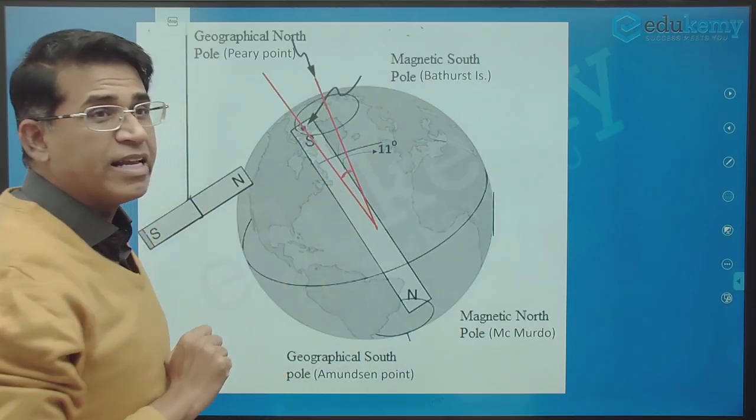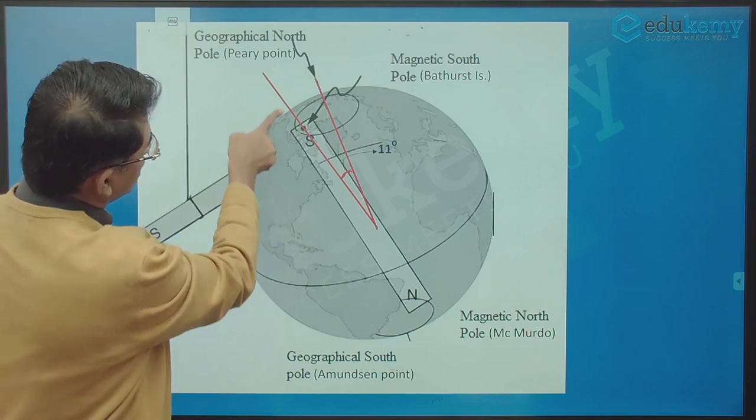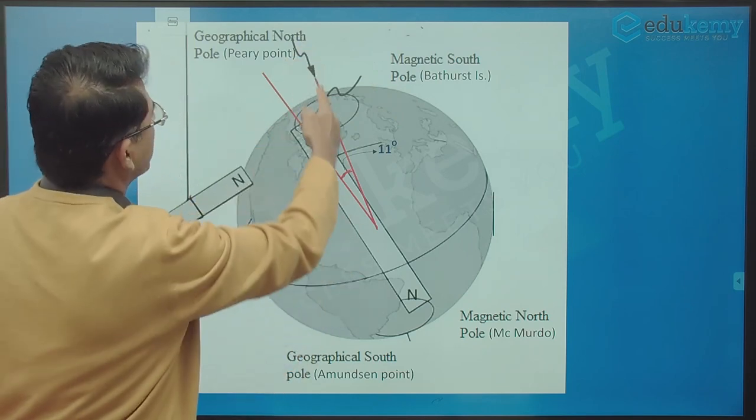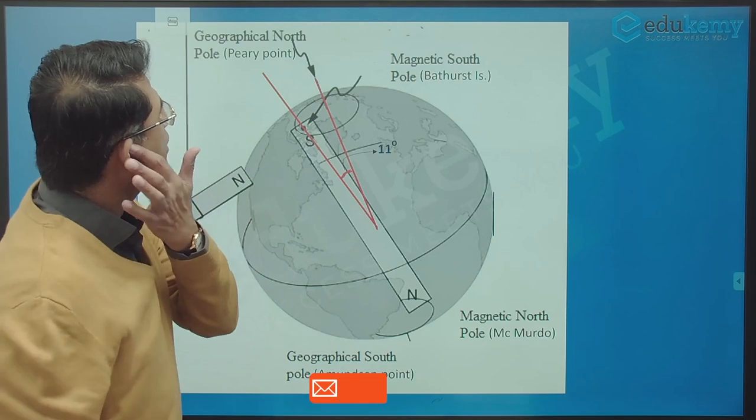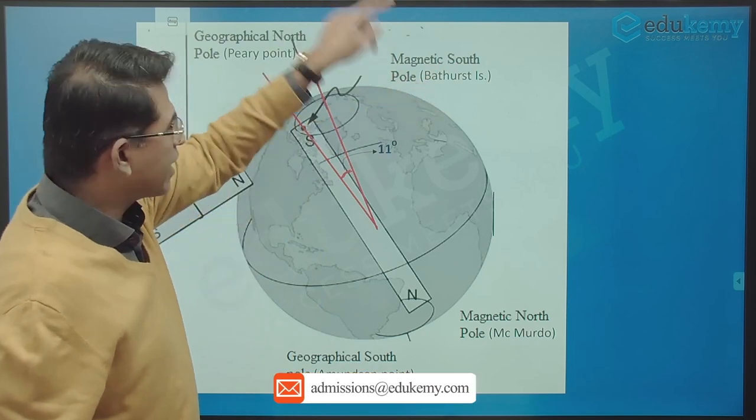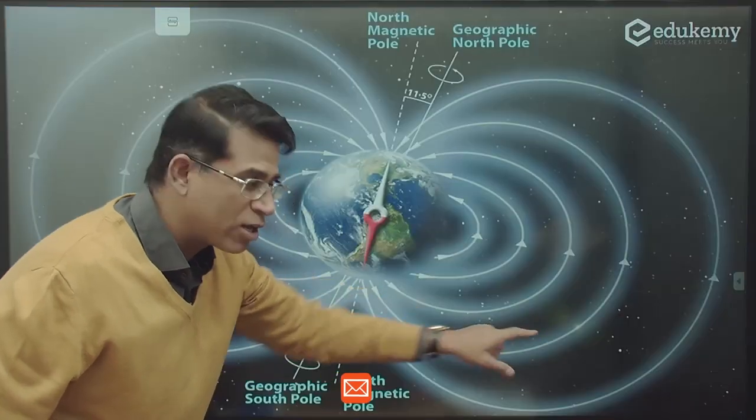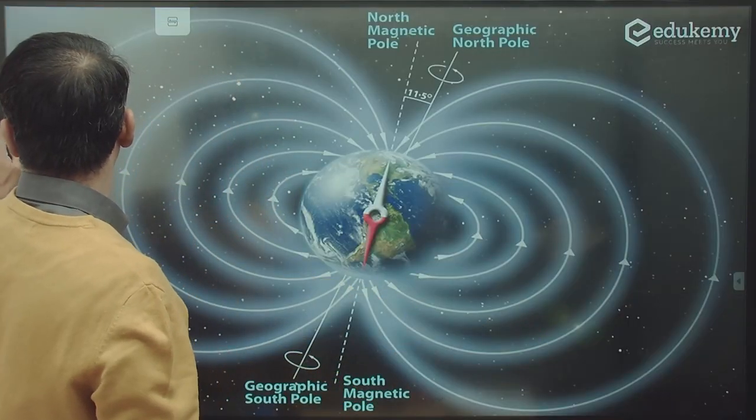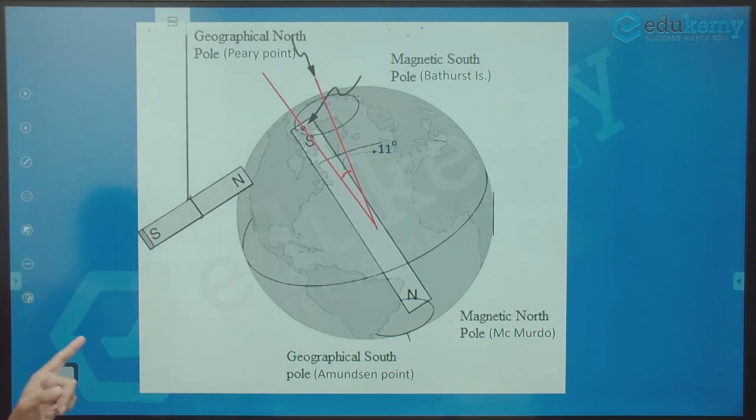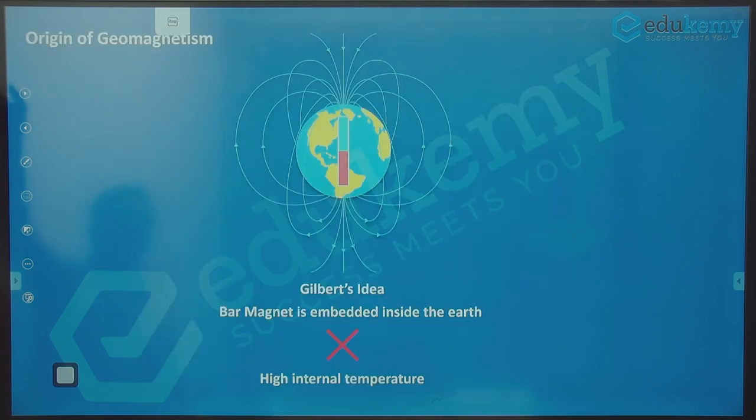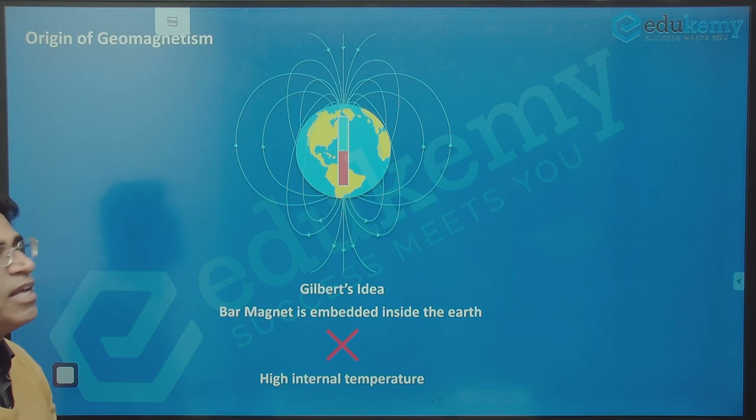This is also called declination - the angle between the magnetic axis and the geographic axis. The south pole is near Canada, the north pole is in McMurdo Sound. This is the orientation of the axis.